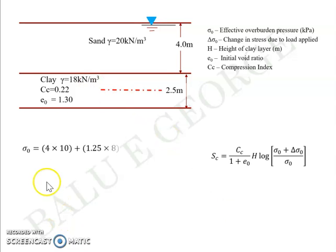So in short, sigma 0 will be equal to 4 into 10 plus 1.25 into 8, so that gives you a value of 50 kilopascal. And delta sigma 0 is the same, 30 kilopascal. So every other term remains the same, and you substitute the value to get Sc as around 0.0488 meters.